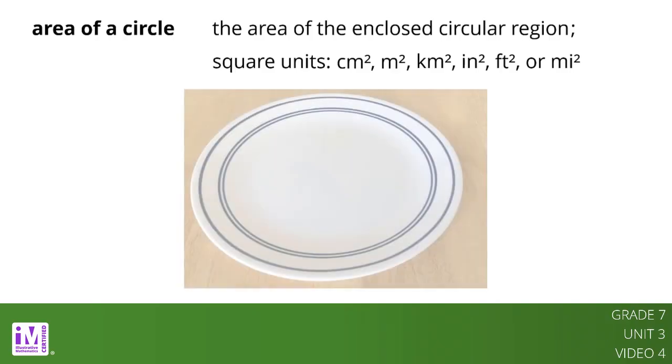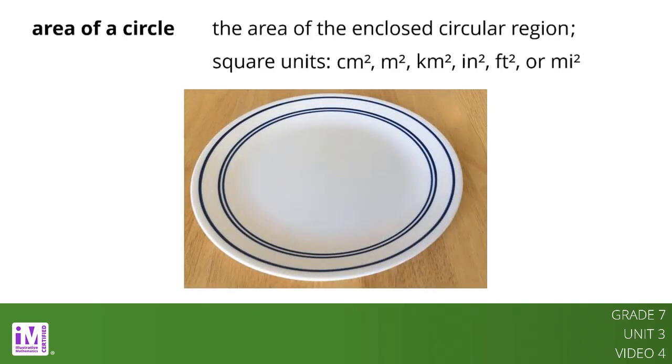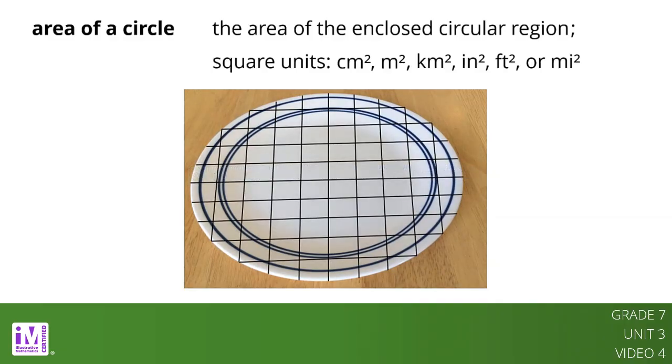For example, a circular plate that has a diameter of 10 inches has an area close to 80 square inches. The reason they don't look like squares is because we're viewing the plate from an angle.